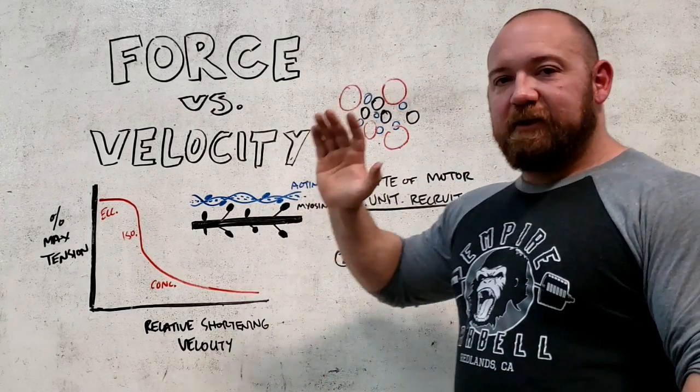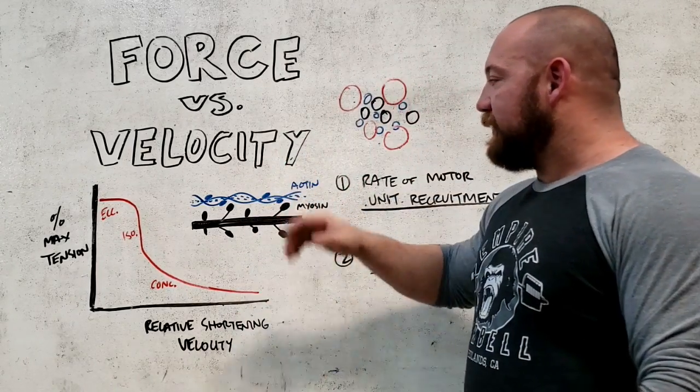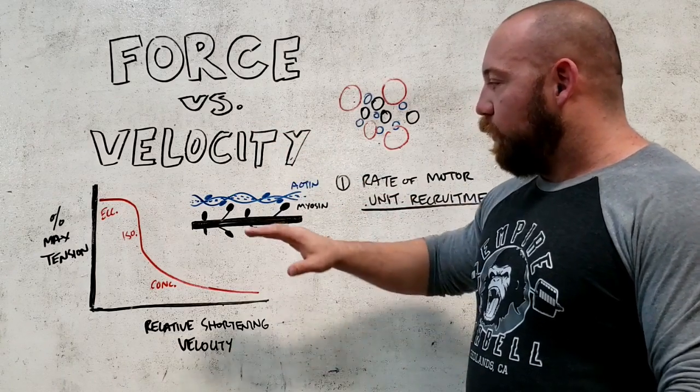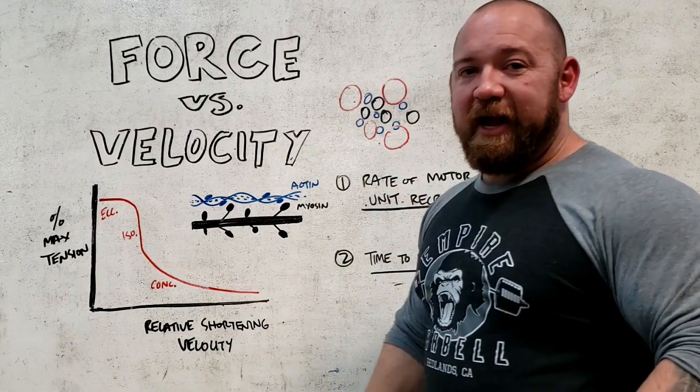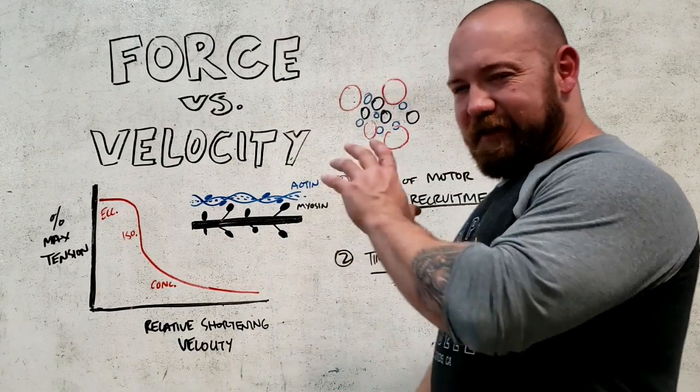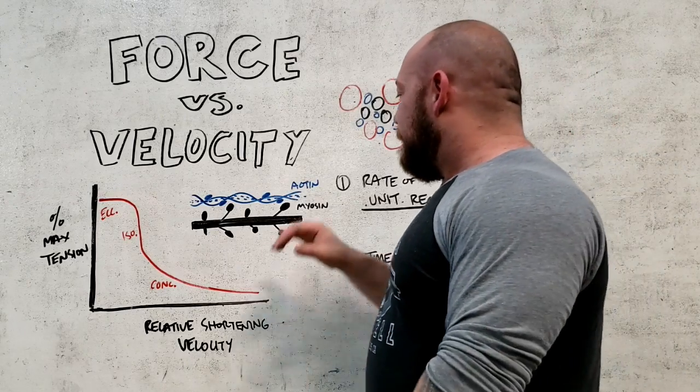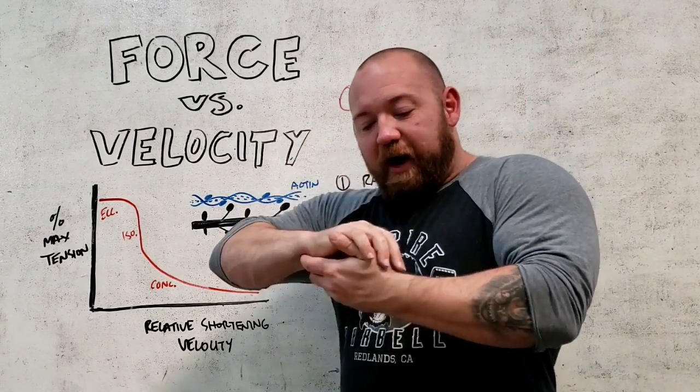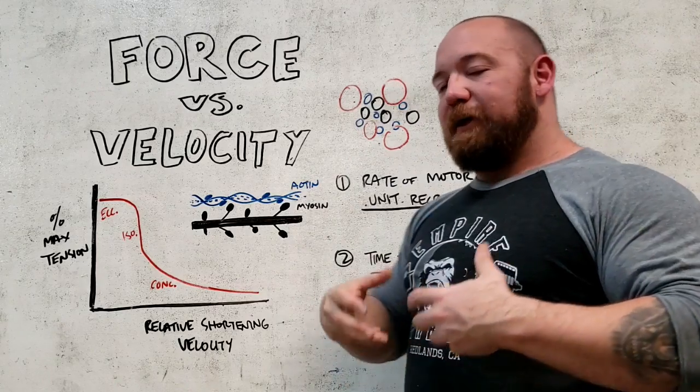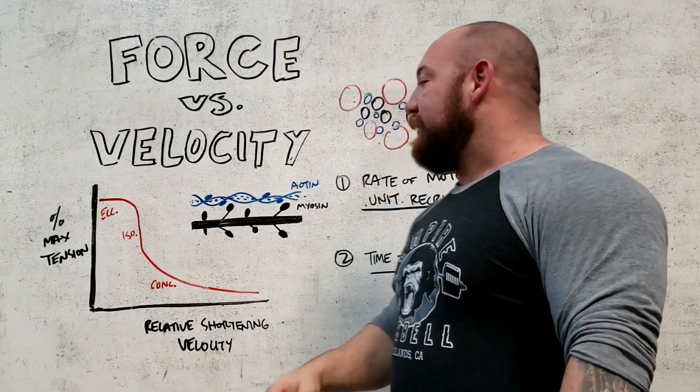It's been a long time since anatomy class. I might be misrepresenting which part of these structures are called what, so don't hinge on this to get through your anatomy and physiology test. This is conceptual, guys. The myosin is going to grab onto the actin, it's going to grab and pull, grab and pull. Every time an ATP reaction goes off, that's what's happening.